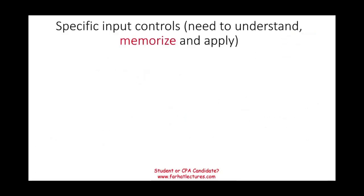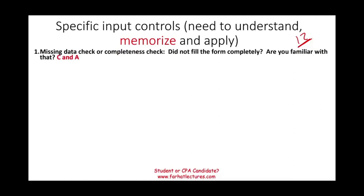I'm going to look at 12 input controls. As a CPA candidate, you have to understand them — they are common sense to a great degree. But you also have to memorize them and know how to apply them given a risk. How would this control address that risk? Starting with the missing data check, or completeness check.